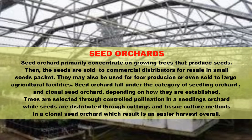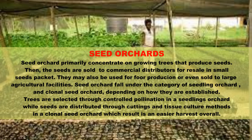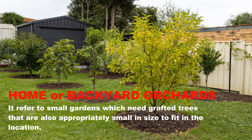Seed orchards fall under the categories of seedling orchards and clonal seed orchards, depending on how they are established. Trees are selected through controlled pollination in a seedling orchard, while seeds are distributed through cuttings and tissue culture methods in a clonal seed orchard, which results in an easier harvest overall.